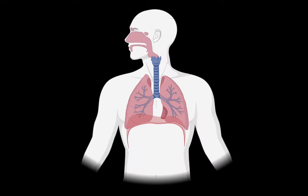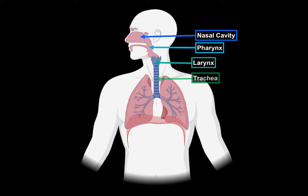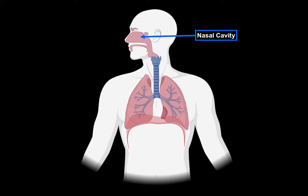The respiratory system consists of all the organs involved in breathing. These are the nose, pharynx, larynx, trachea, bronchi, and the lungs. Our focus is to cover the anatomy of all of the structures you see here, step by step, and we will start by covering the detailed anatomy of the nose and the nasal cavity.